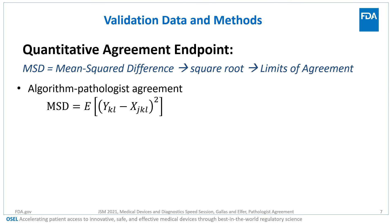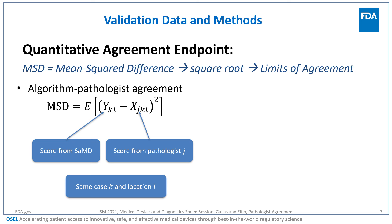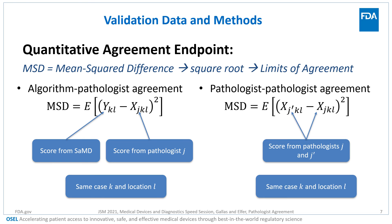I'd like to show you more, especially results related to the mean square difference. But given this is a speed session, I can't do that in four minutes. Instead, let me just say that we are not dealing with textbook data. The data are not independent and identically distributed. So we're developing sophisticated methods to treat the non-stationary data and the complicated correlations.